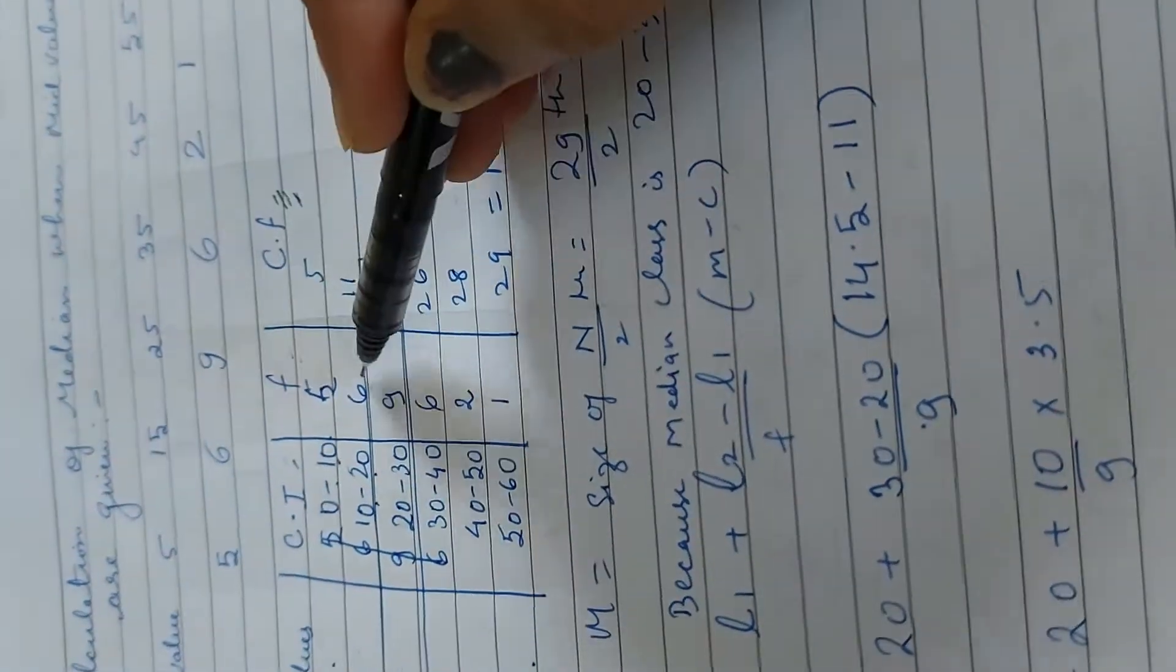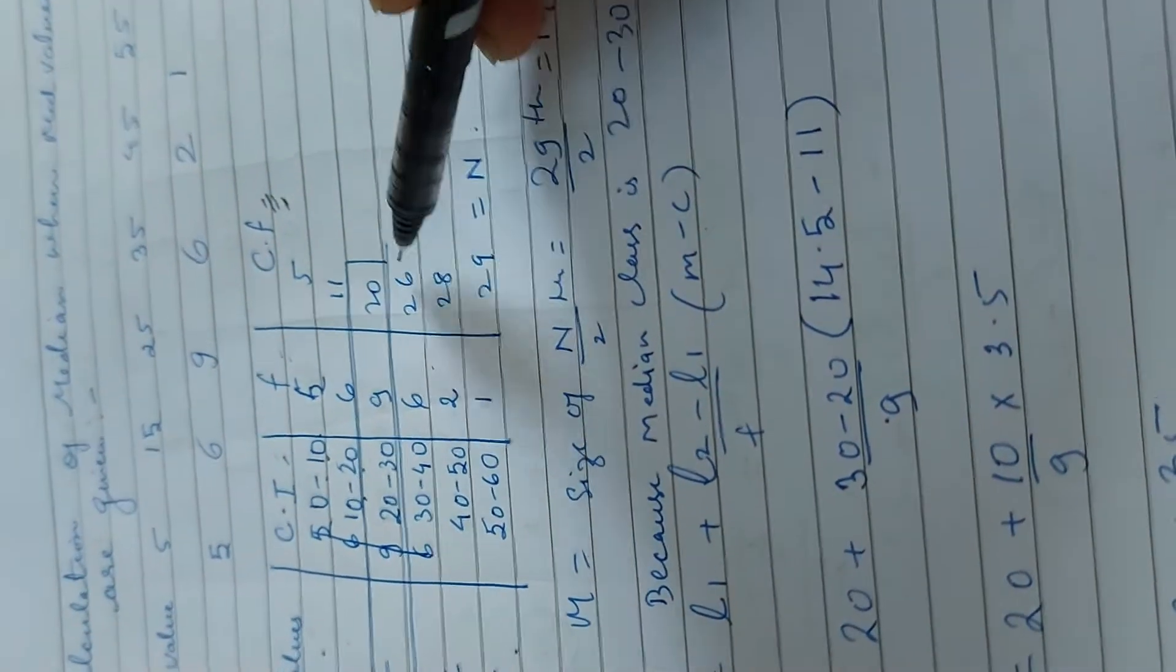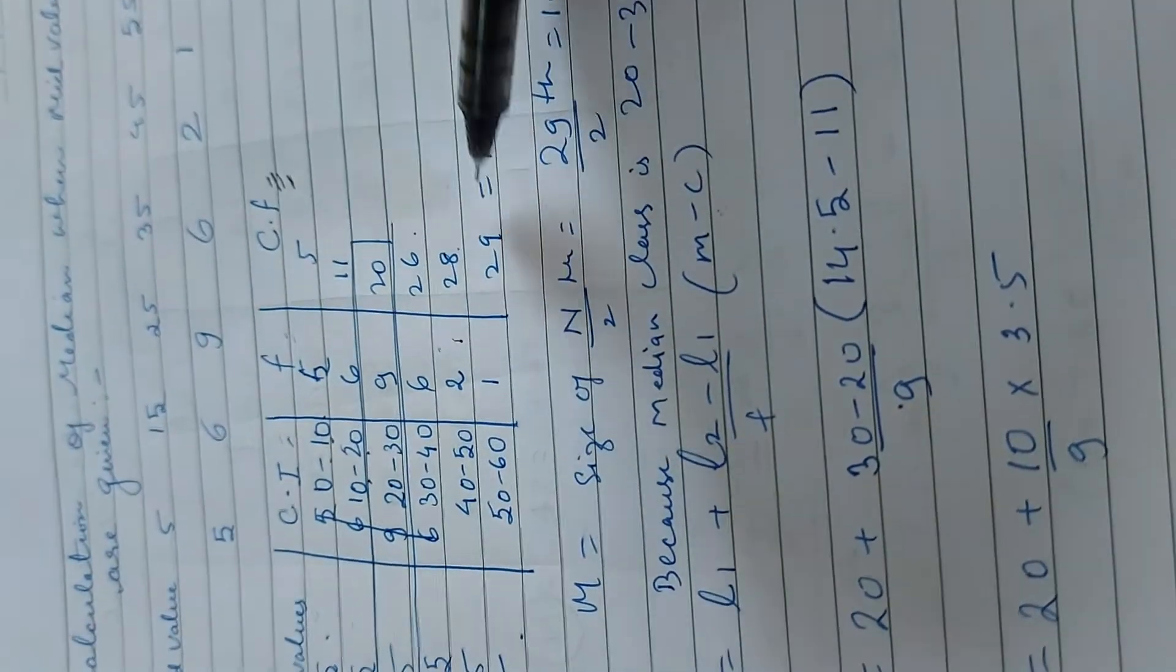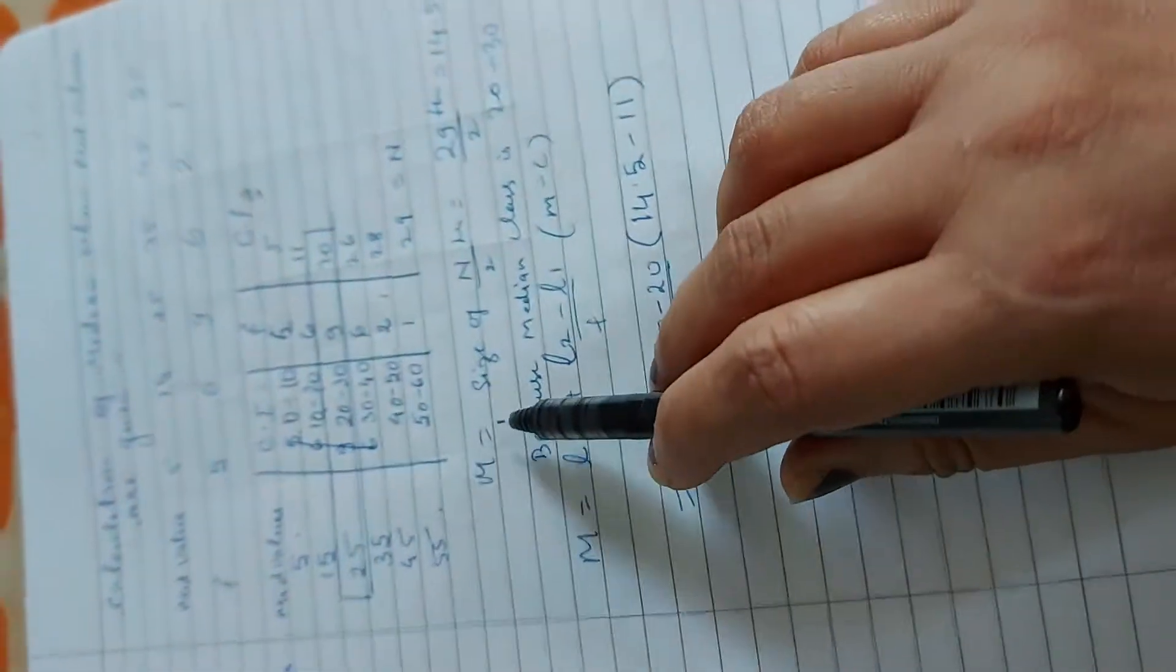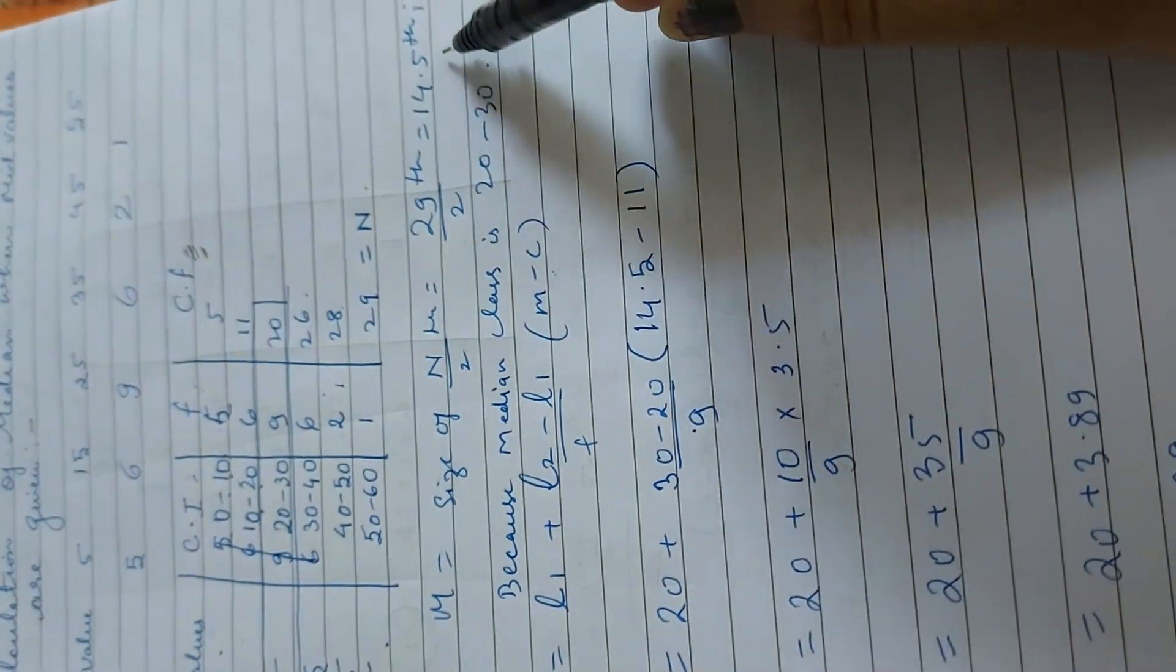We have to plus the 5. 5 plus 6 is 11. 11 plus 9 is 20. 20 plus 6 is 26. 26 plus 2 is 28. 28 plus 1 is 29. Now, we will put our formula. Size of n by 2th is equal to 29 by 2th. That is 14.5th item.